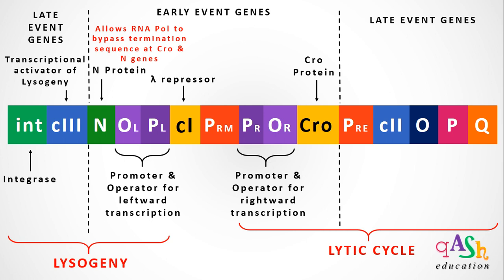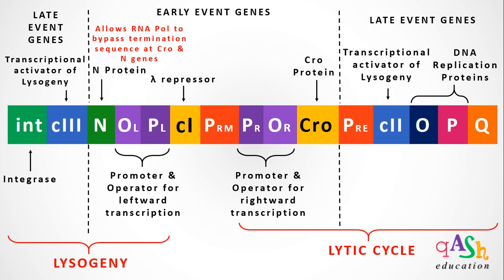Among the late event genes in the lytic cycle, the C2 gene codes for a C2 protein. Surprisingly, this C2 protein is also a transcriptional activator of lysogeny, while it is still placed amongst the genes required for lytic cycle maintenance. The O and P genes code for DNA replication proteins required to produce many copies of the viral genome, which will be packaged into small virion particles. Another late event gene of the lytic cycle is the Q gene, coding for a Q protein, which is an anti-terminator of replication.